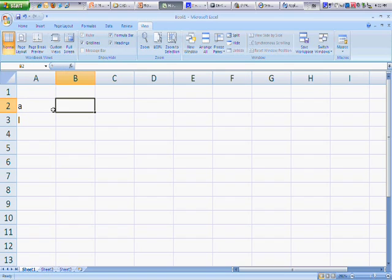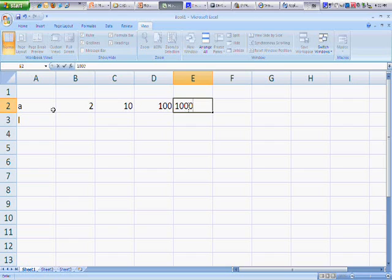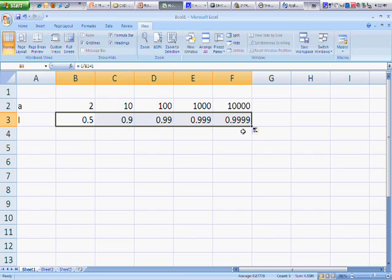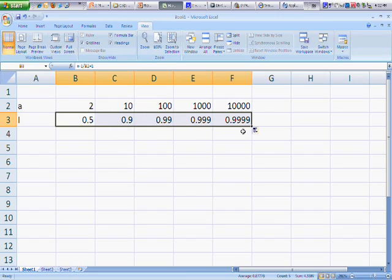So we have a and i, and a values are 2, 10, 100, 1,000, and 10,000. And the corresponding values of i are equal to minus 1 over a plus 1. So we have 0.5 for the first one. And if I drag this now, Excel calculates the other values of i. So I have 0.9 when a is equal to 10. Then I have 0.99, 0.999, and 0.9999.